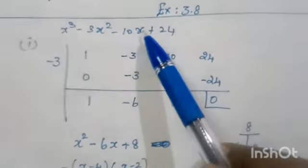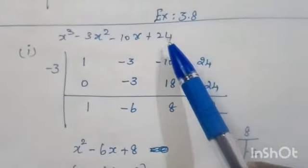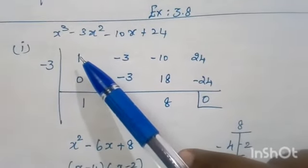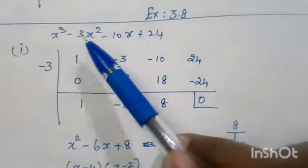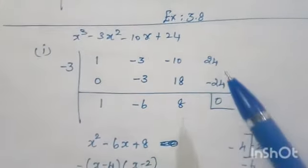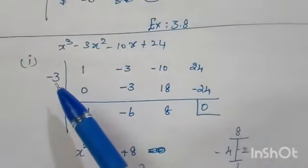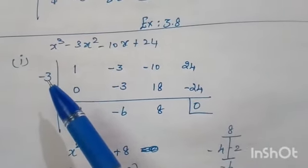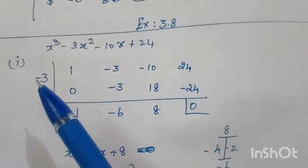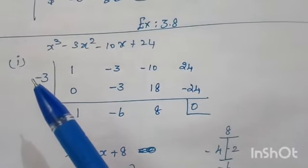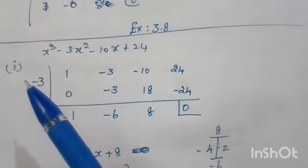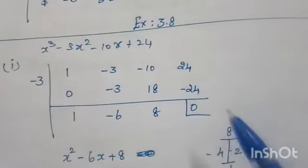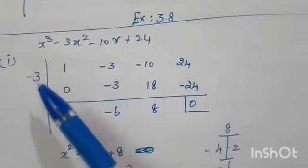For the first problem, x³ minus 3x² minus 10x plus 24, we take the coefficients and constant term: 1, minus 3, minus 10, 24. Since the factor is not given, we need to find it by trial. We check values 1, minus 1, 2, minus 2, and so on, substituting one by one. Whichever value gives remainder 0 is the factor.